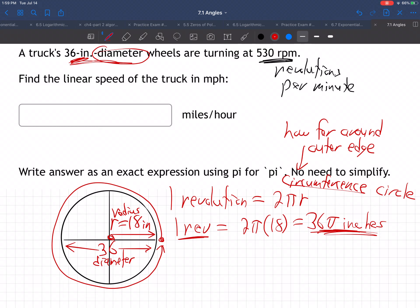So every time that tire goes all the way around, here it is where it's hitting the ground, 36 times pi inches of ground have been covered as the truck cruises down the road and the tire rolls. Every time it goes all the way around, 36 pi inches. Okay, great. So what? Well, we want miles per hour.